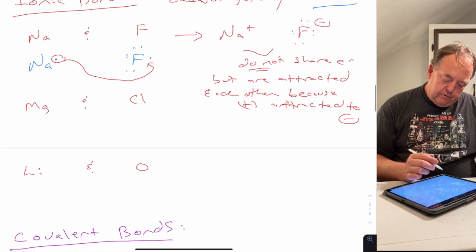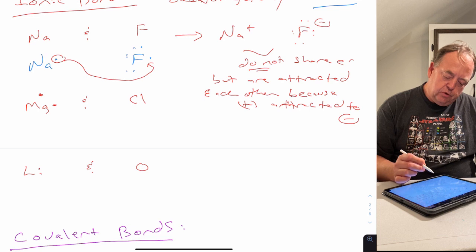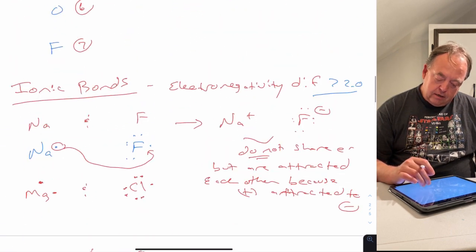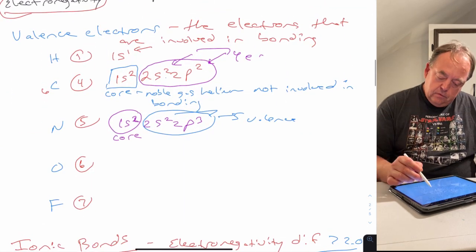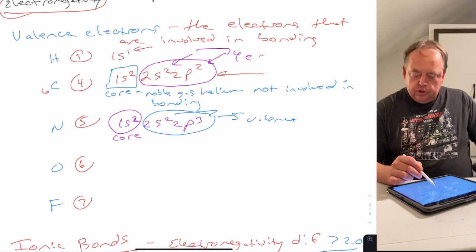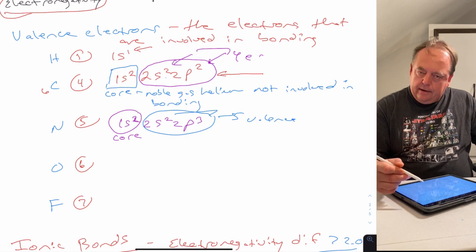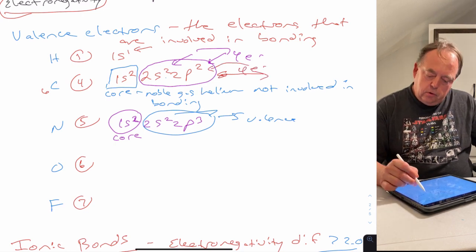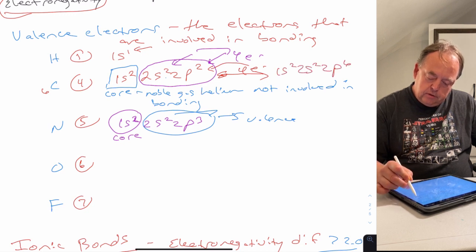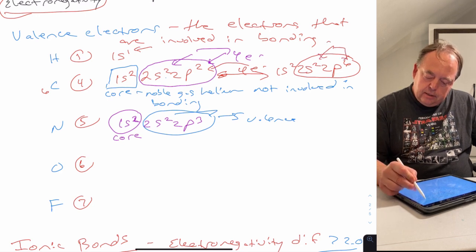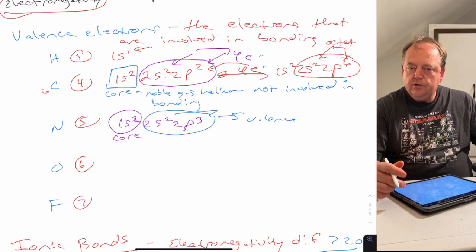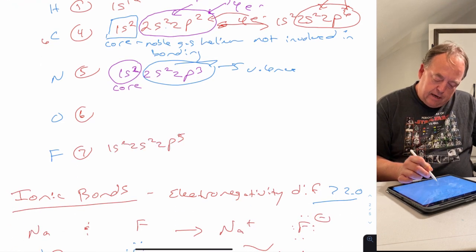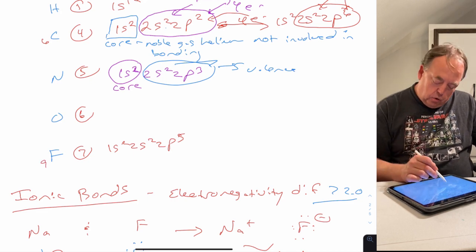If we do the same thing with magnesium and chlorine: magnesium is in group two so it has two valence electrons, and chlorine is in group seven so it has seven. Remember the octet rule — atoms like to have eight electrons. Carbon has four electrons in its outer shell; if it gains four more it would complete the outer shell by filling 2p to give 1s² 2s² 2p⁶, satisfying the octet rule.